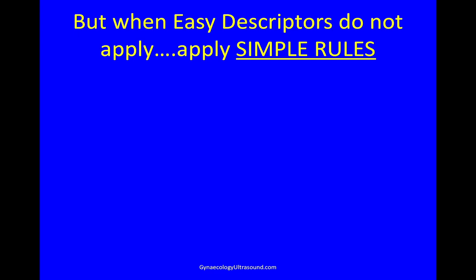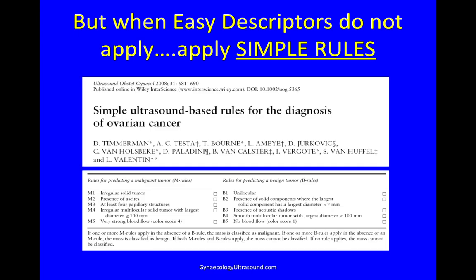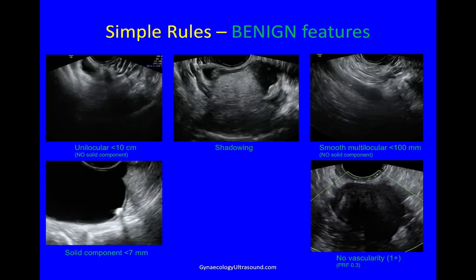That's half of the masses described by easy descriptors. If they don't apply, then you can apply simple rules. Simple rules was published by the IOTA group in 2008 and they're very good — there are five benign features and five malignant features.